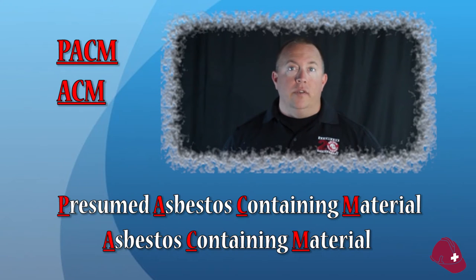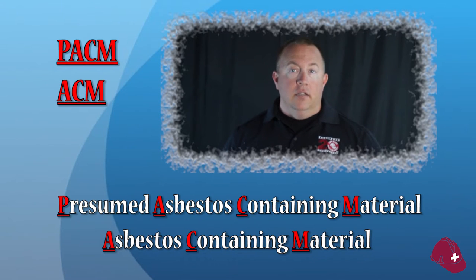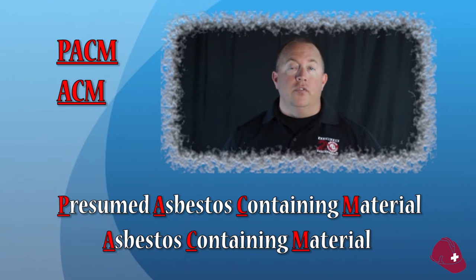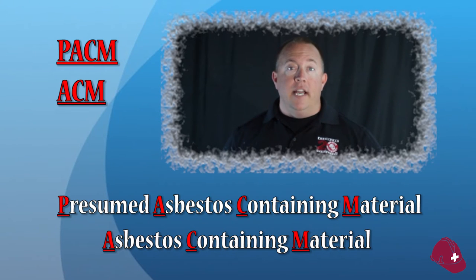Asbestos was widely used for its durability and fire resistance until the late 1990s. So all tiles, insulation, roofing material, taping mud, and the like should be PACM — presumed asbestos containing material — until proven that it is, in fact, ACM (asbestos containing material), or that it is free from asbestos.